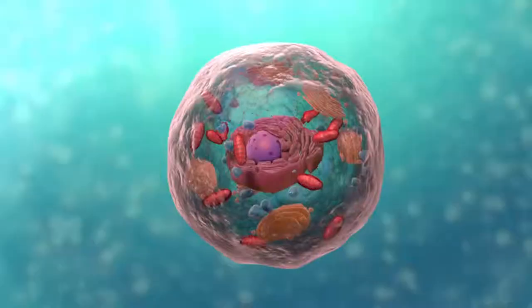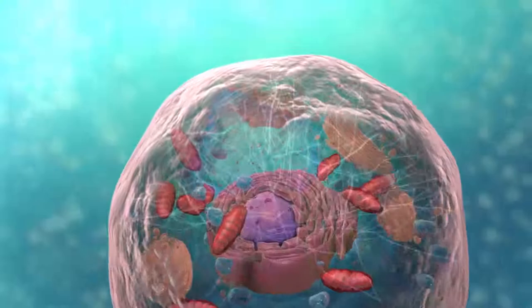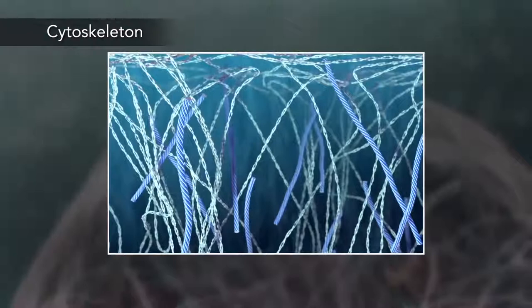Meanwhile, the cell maintains its shape through a cytoskeleton. The cytoskeleton includes the thread-like microfilaments, which are made of protein, and microtubules, which are thin, hollow tubes.